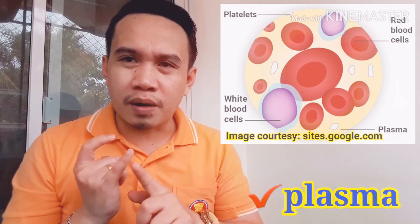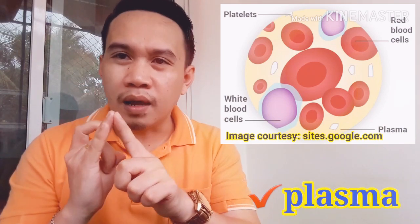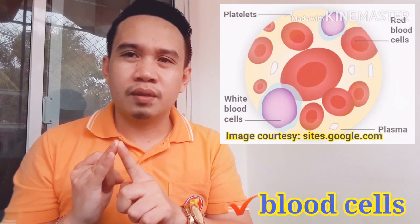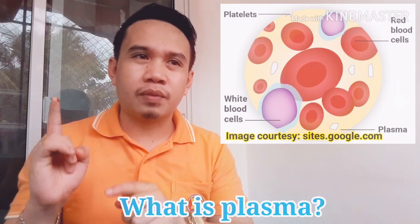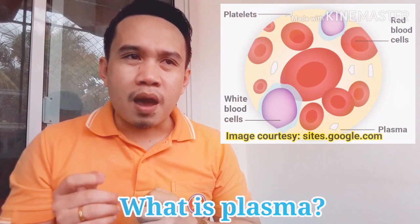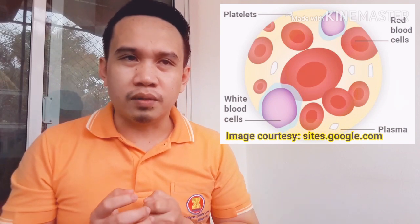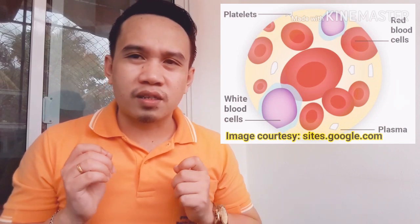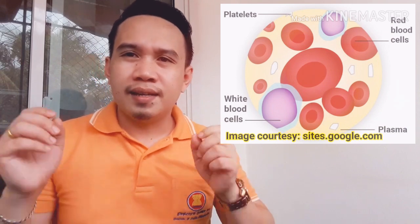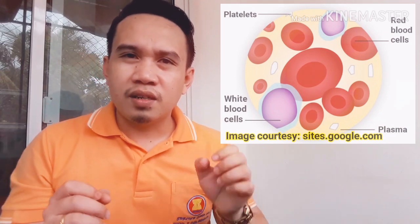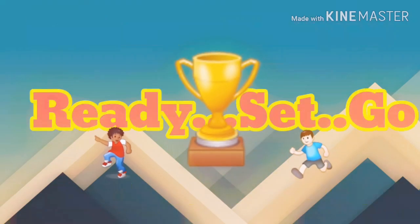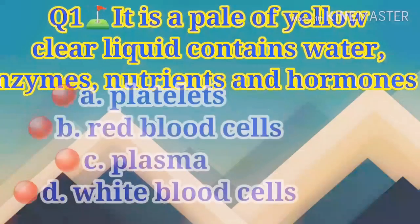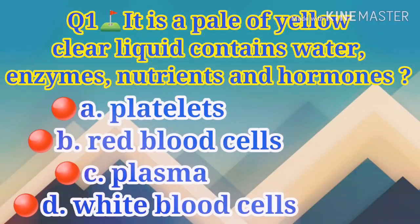You might wonder what blood is made up of. Blood consists of plasma and blood cells. Plasma is a pale yellow clear liquid containing water and several substances such as enzymes, nutrients, hormones, carbon dioxide, and metabolic waste.